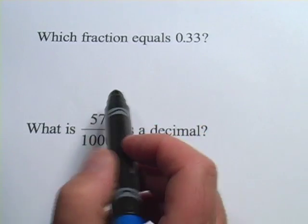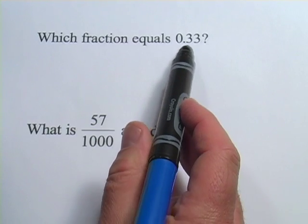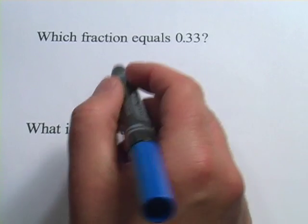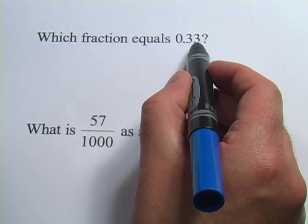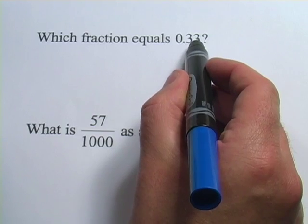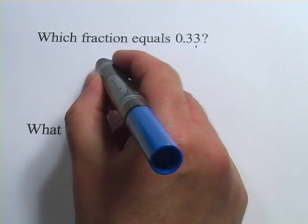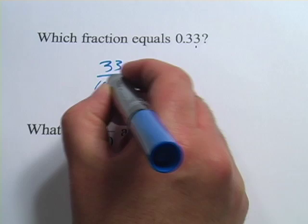Let's look at the next problem. What fraction equals 0.33? Well, 0.33 is 33 one-hundredths. The last place here is hundredths, and there are 33 before that. So 33 one-hundredths.